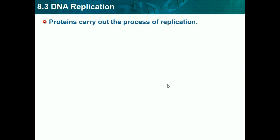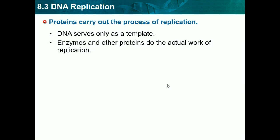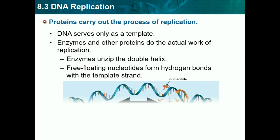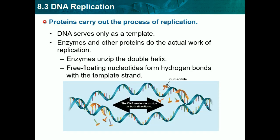Proteins carry out the process of replication — DNA serves only as a template. Enzymes and other proteins do the actual work. Enzymes unzip the double helix, giving two separate strands. Then free-floating nucleotides form hydrogen bonds with the template strand, coming from the cell's cytoplasm and attaching to the DNA.